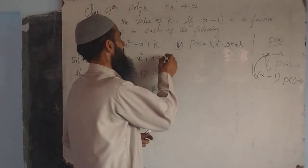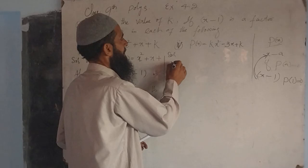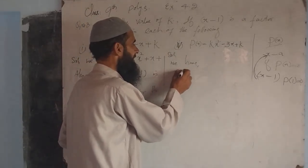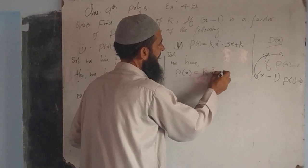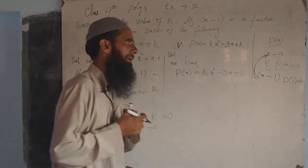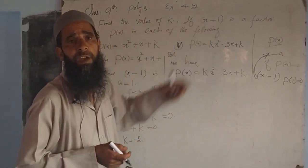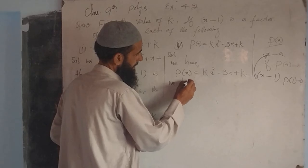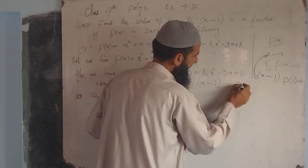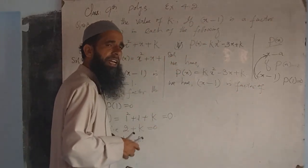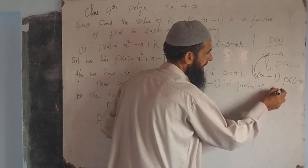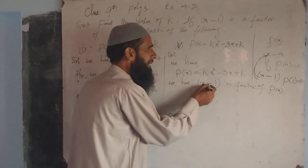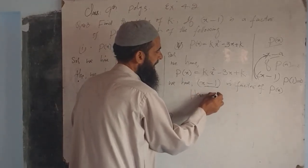Now the solution of the fourth part. We have the given polynomial p(x) = kx² - 3x + k. Same condition: x-1 is a factor of p(x). This satisfies all the conditions of the Factor Theorem. Comparing x-a with x-1, here a = 1.